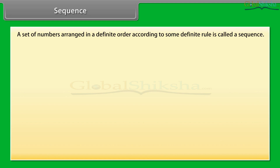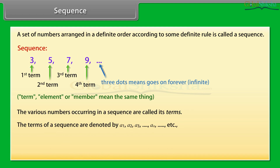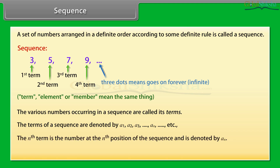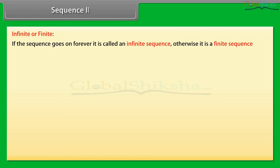A sequence is a set of numbers arranged in a definite order according to some definite rule. A sequence can be infinite or finite. If the sequence goes on forever, it is called an infinite sequence; otherwise, it is a finite sequence.